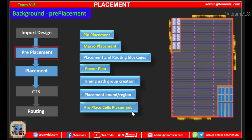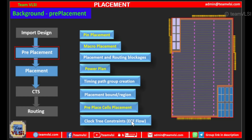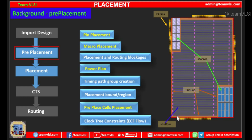Next, if we are running the IFF flow, then we will read the clock tree constraints in this stage. In short, we do IO pin placement, macro placement, power plan with site row creations, end cap cell placement, and well tap cell placement. These are the basic things which we have already done before starting the placement stage.